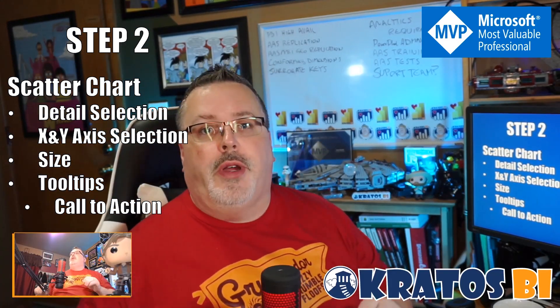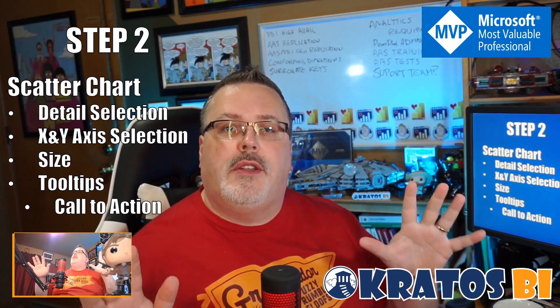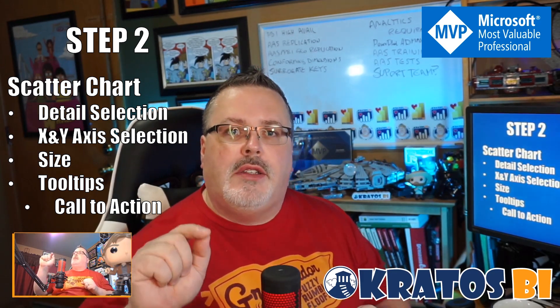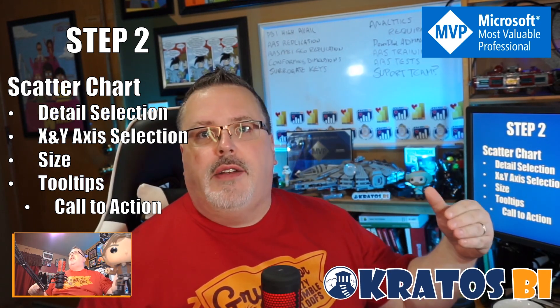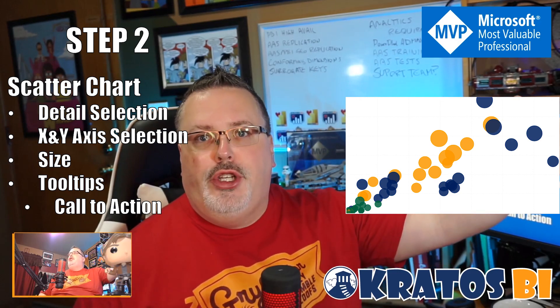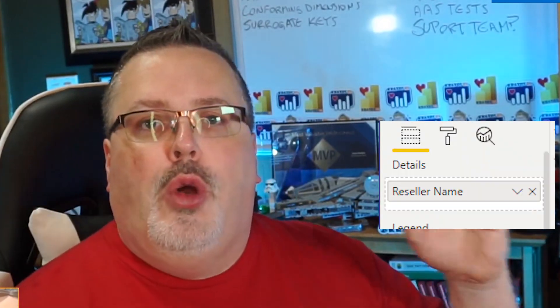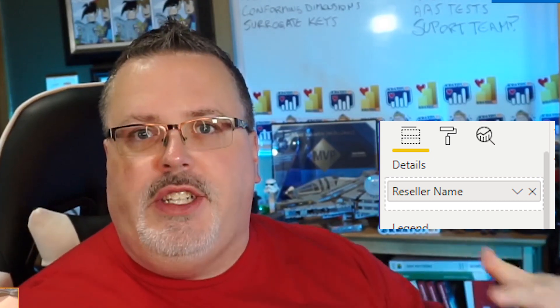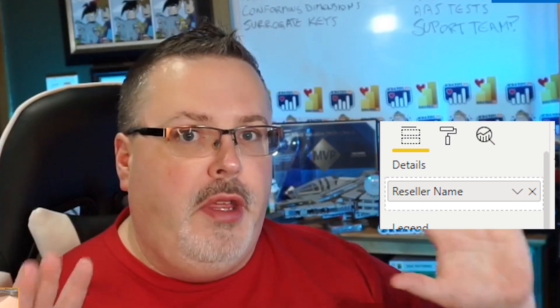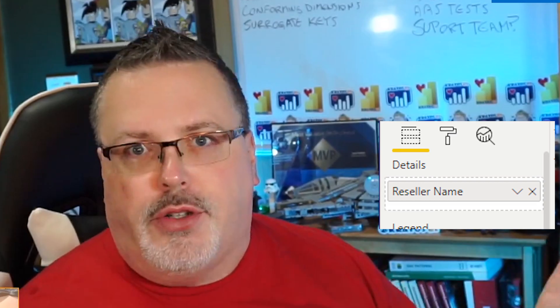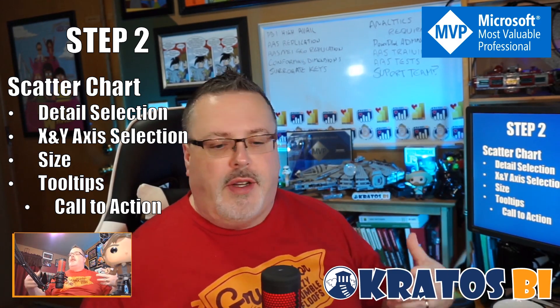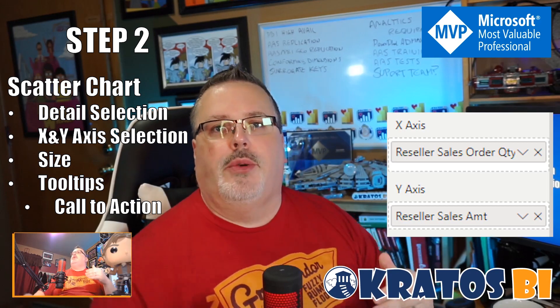Step two when creating a great scatter chart is to really focus on how you want it to look, feel, and function for your end users. The scatter chart is all about showing details and highlighting outliers inside of the data set — finding those people that are doing exceptionally well in one, two, or three different dimensions. When we talk about details, we're talking about who the individuals are that you're going to be analyzing: these can be customers, products, or salespeople — whatever detailed aspects you want to review.